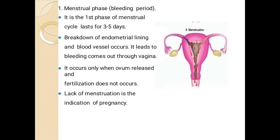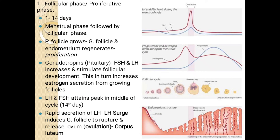The first phase is the menstrual phase, also known as the bleeding phase. In the first phase of the menstrual cycle, it lasts for three to five days. In this phase, the endometrium lining breaks down along with blood vessels and comes out through the vagina. It occurs only when the ovum is released and fertilization does not occur. Lack of menstruation is the indication of pregnancy.